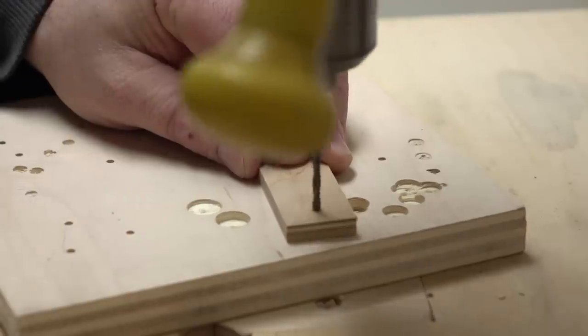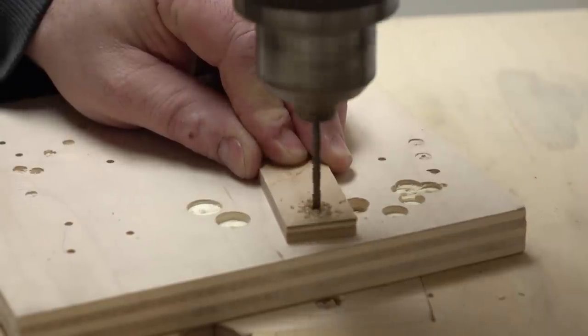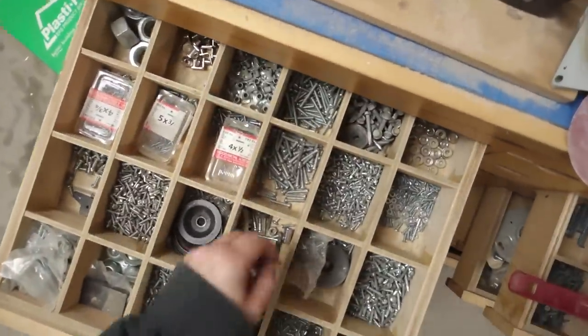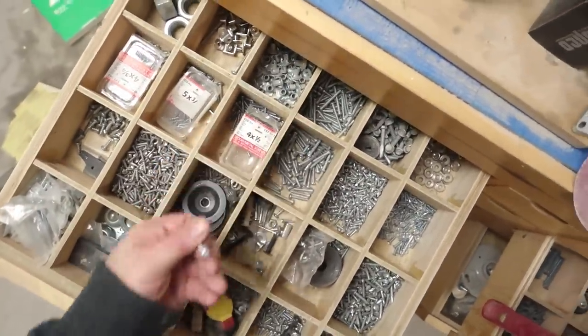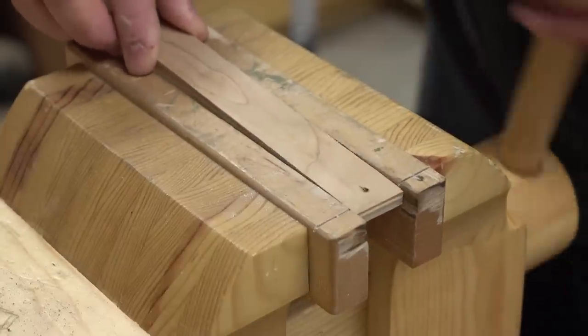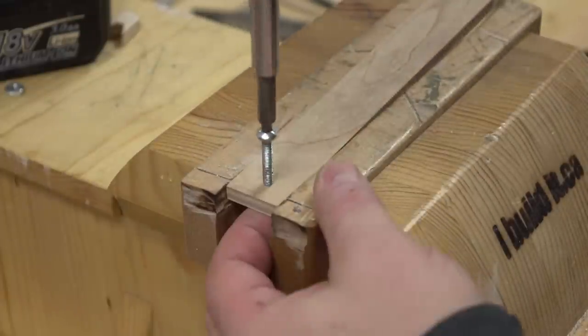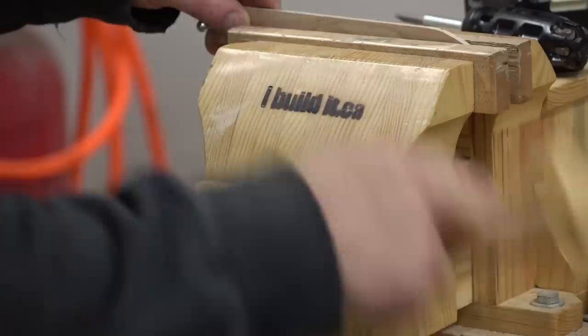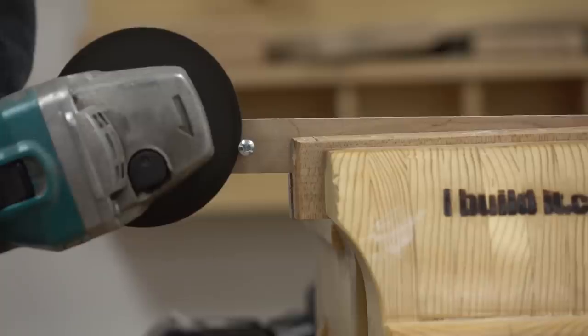The blade needs a pin that slots into the bullets that will push the blade back and forth. I'm using a number eight machine screw threaded into the hole that I just drilled. And then I can cut that off to the right length with the grinder that has no guard.